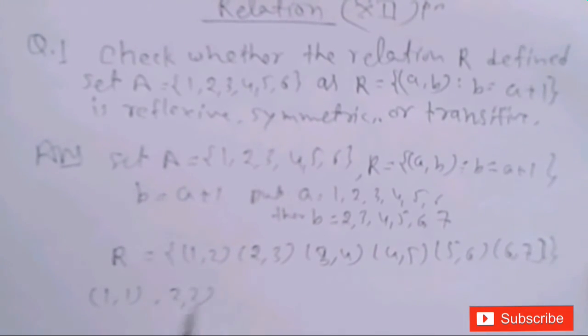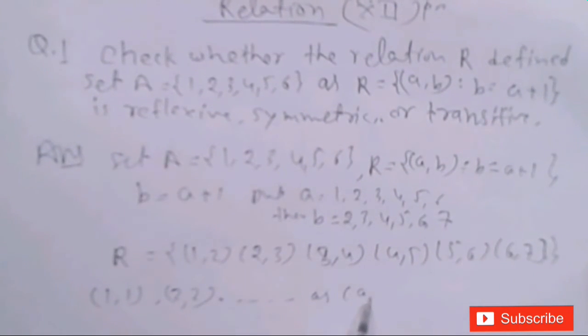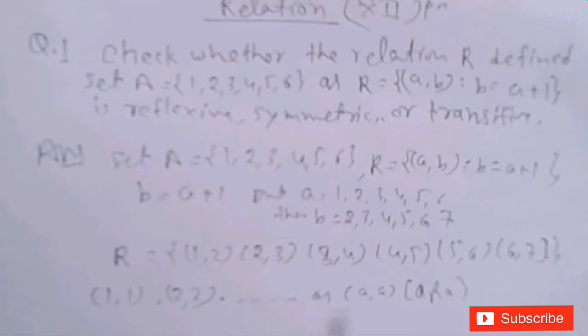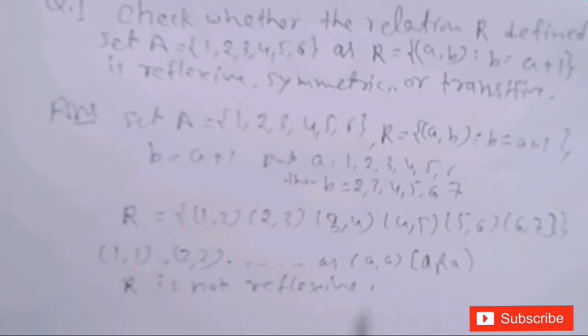Here (1,1), (2,2) etc. are not present — (a,a) is not in R. इसलिए R is not reflexive. Reflexive में किसी भी element के लिए (a,a) present रहनी चाहिए, परन्तु यहाँ वो नहीं है।